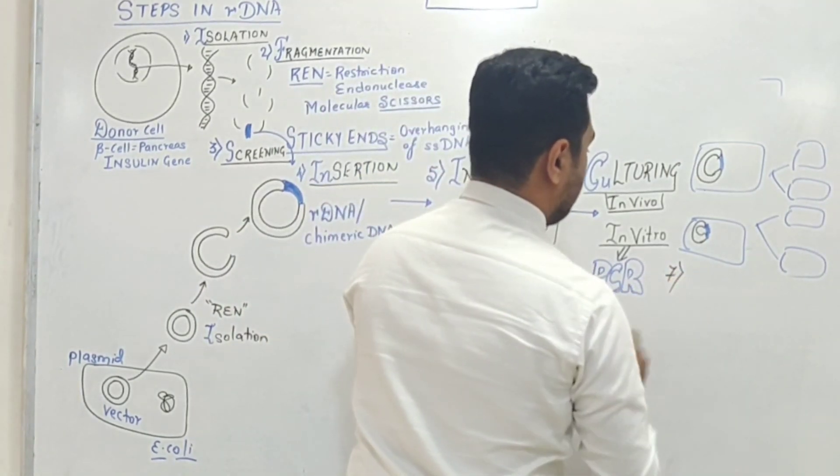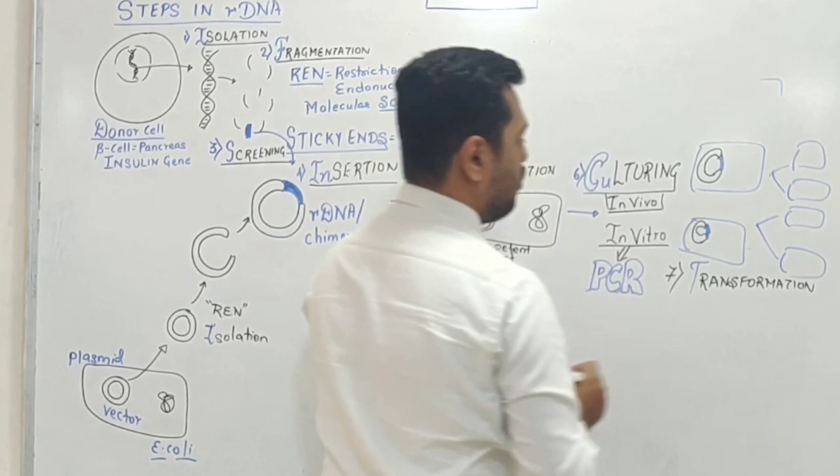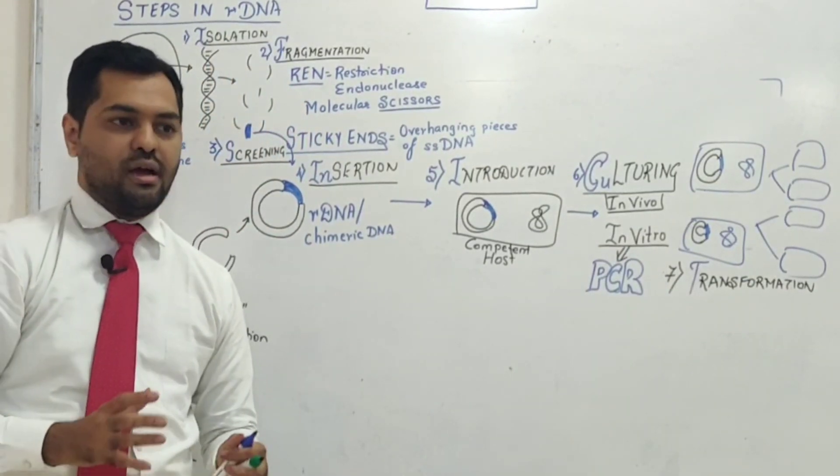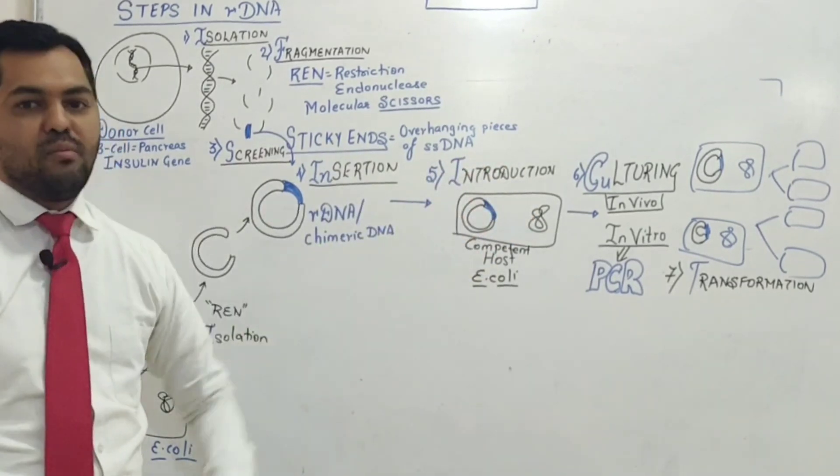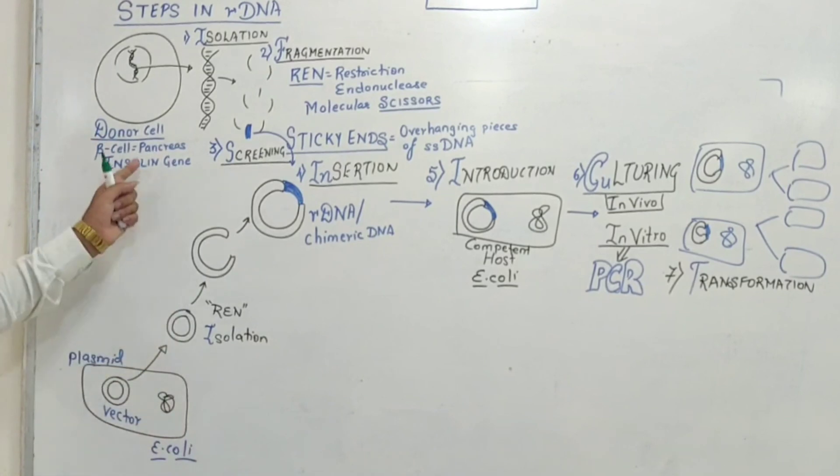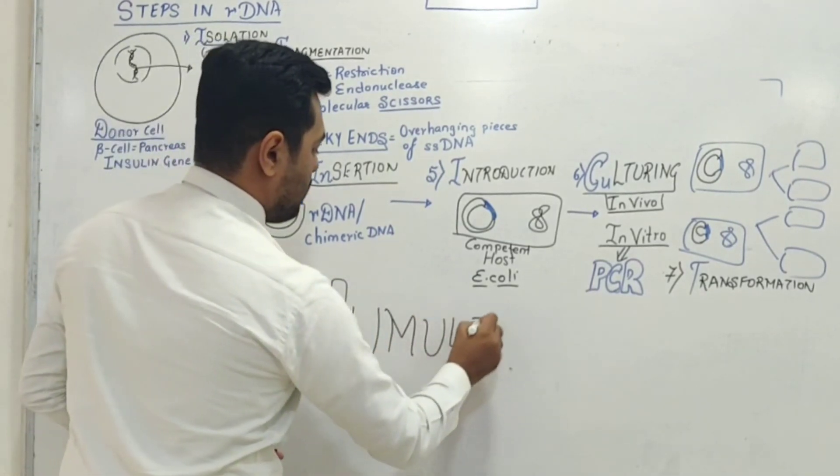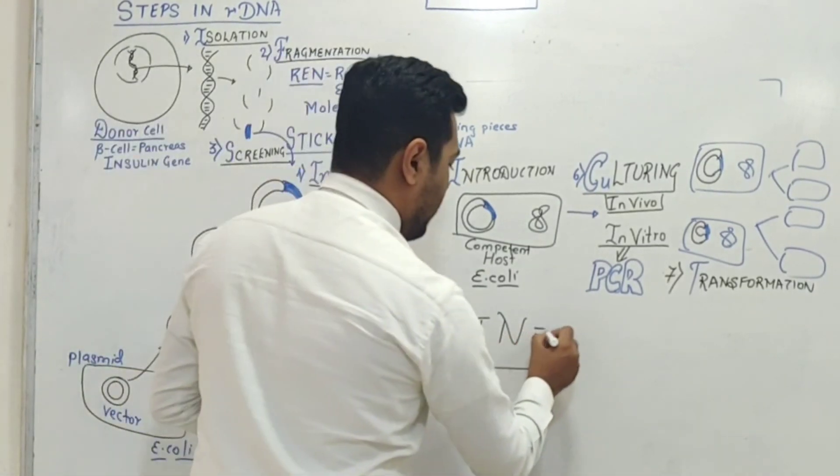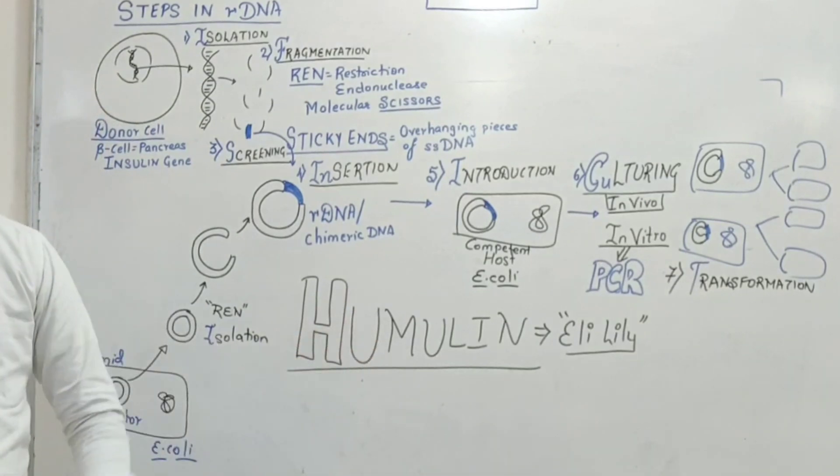The process of transformation has been finally achieved. In all bacterial clones, our desired gene will express, and rDNA will express large-scale insulin production using this competent host E. coli. We have achieved transformation by using E. coli where we started human insulin production. This human insulin production is called humulin. The American organization Eli Lilly started the production of this humulin.